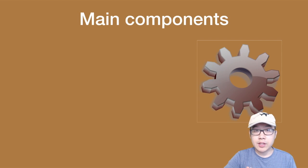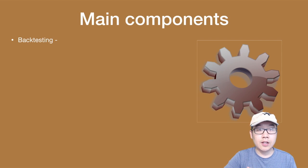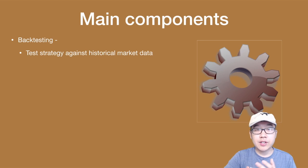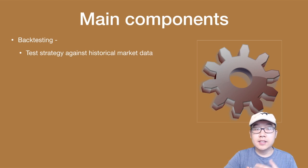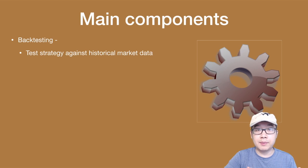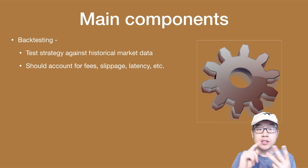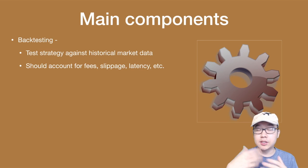The main components of trading bots include the following. First, a backtesting component, which allows you to test any strategy you come up with against historical market data to see if it would have been successful. Great backtesting strategies include fees, slippage, latency, etc., just to be realistic because those can affect your profit too.